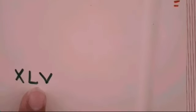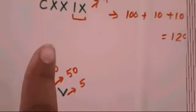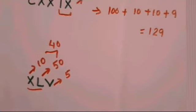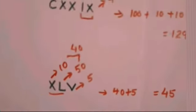Let's take another example: XLV. X represents 10, L represents 50, and V represents 5. Notice that 10 comes before 50, and when a smaller number comes before a larger number in Roman numerals, subtraction takes place. So we subtract 10 from 50 to get 40, meaning XL represents 40, and XLV represents 40 plus 5, which is 45.